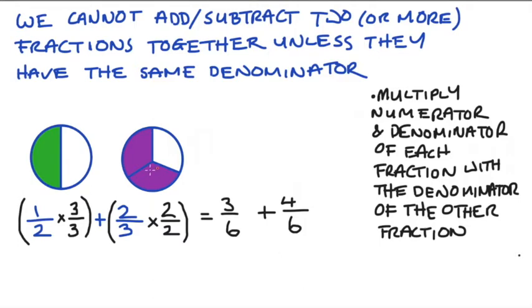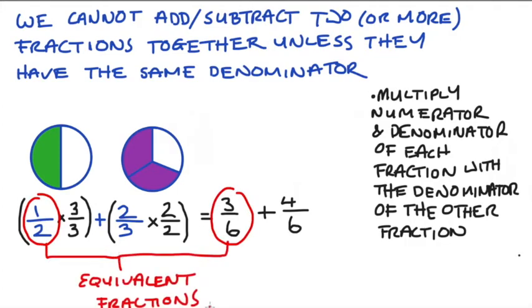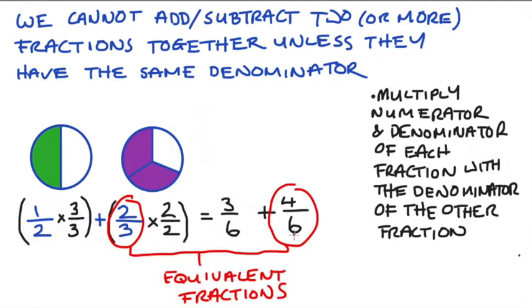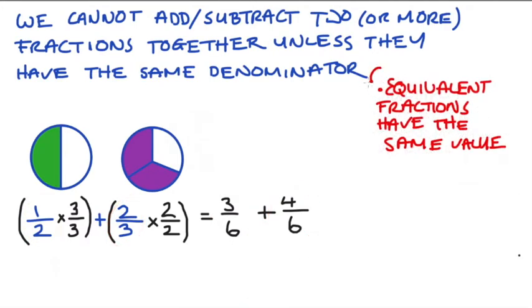To see why, it's good to note that 1 over 2 and 3 over 6 are what we call equivalent fractions, as are 2 over 3 and 4 over 6. Equivalent fractions are fractions that have the same value as one another.